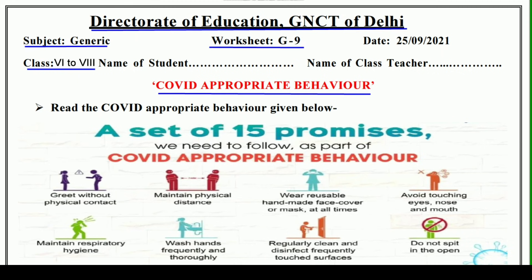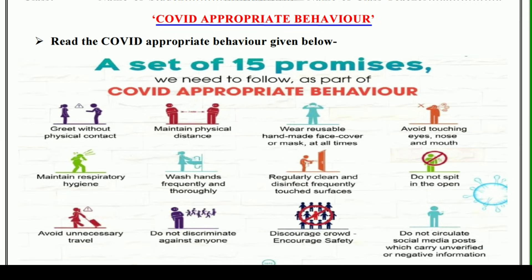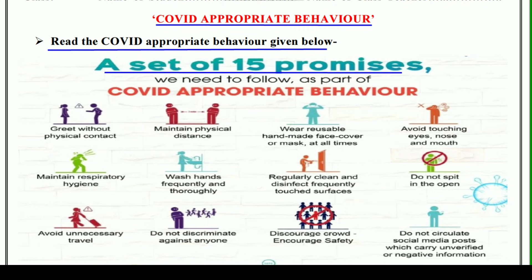So without wasting our time, let's start and understand with me. Read the COVID appropriate behavior given below — yani COVID ke dauran hume kis prakar ka vyavahaar karna chahiye, jo bilkul uchit vyavahaar hai, woh hume karna chahiye. A set of fifteen promises we need to follow as a part of COVID appropriate behavior. Yani pandrah vadon ka ek samuh jis ko ki hume follow karna hai. Ab hum aapko pandrah aisi aadaton ke baare mein batane wale hain jinko ki aapko apni daily life mein apnana hai aur COVID se bache rehna hai.